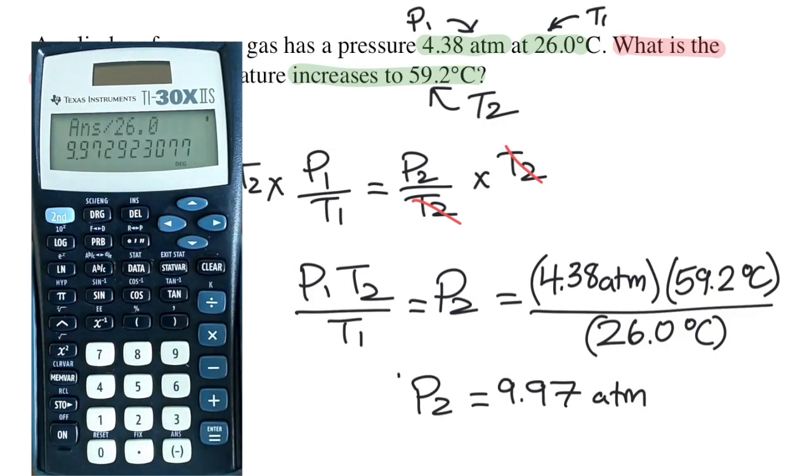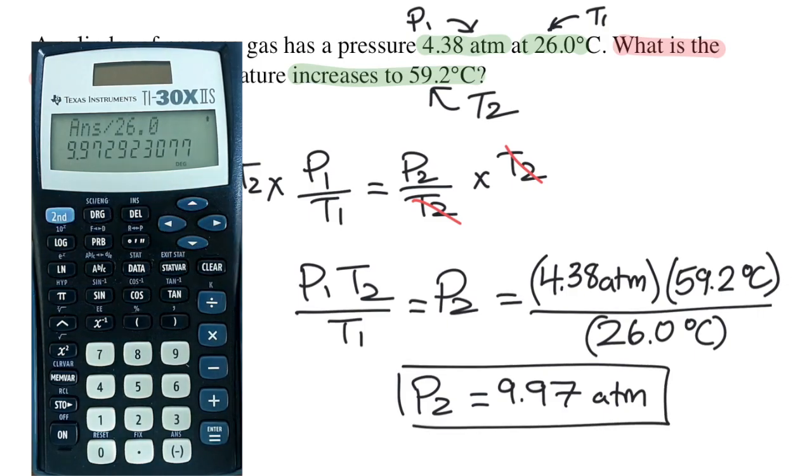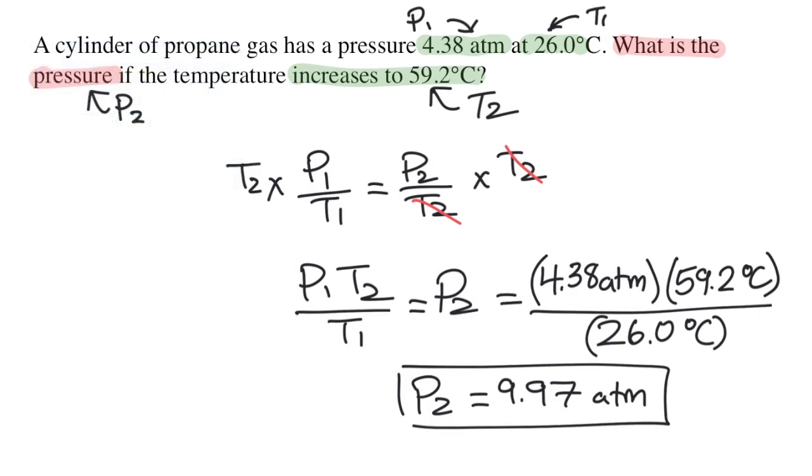I'm going to round this answer to three digits because each of the given variables had three significant digits. And so my answer is 9.97 and the unit is atmospheres because that's the unit used for pressure.